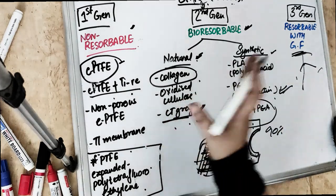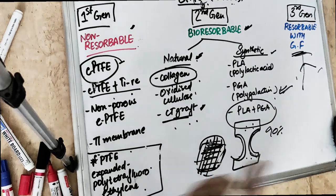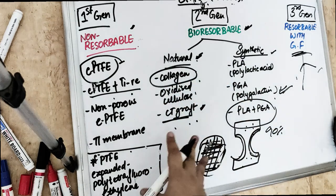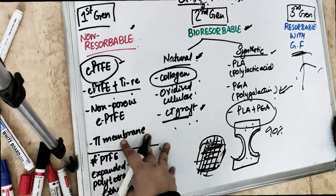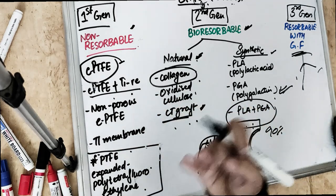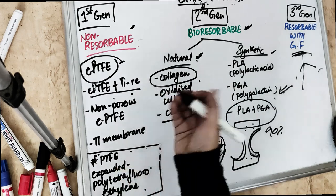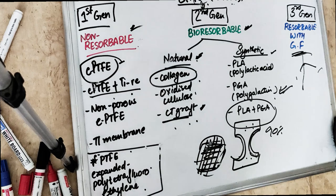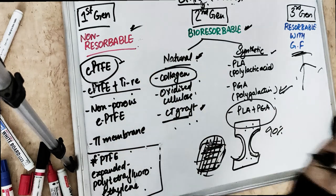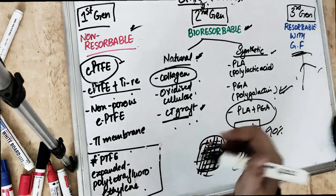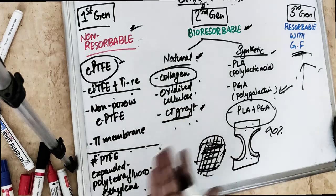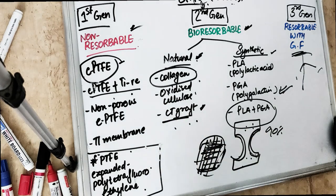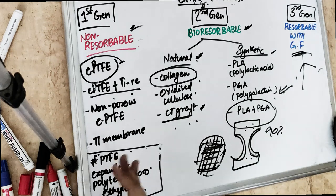Once the GTR membrane is placed and periodontal tissue regeneration occurs, how do we check for success? We can take a radiograph, or do a surgical re-entry when removing the non-resorbable membrane during the second surgery. We can also check through probing depth measurements. In a study context, the tooth can be extracted, sectioned, and evaluated histologically - though this is for research purposes only, not for patient care.